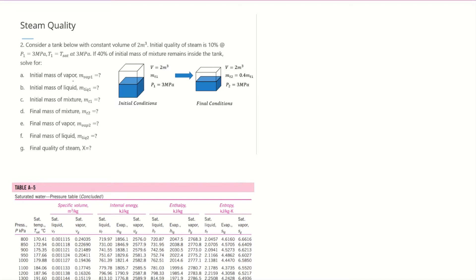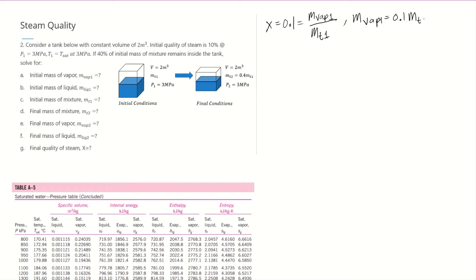We need to compute for the initial mass of vapor and liquid. Let's start with the initial quality of steam. x is equal to 0.1, which means x equals the mass of vapor Mvap1 over the total mass of the mixture MT1. So Mvap1 is equal to 0.1 times MT1.